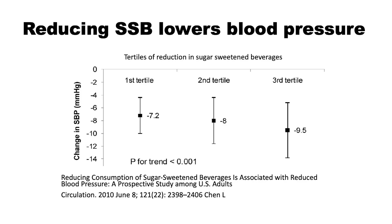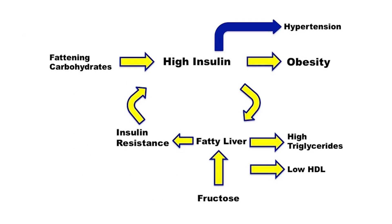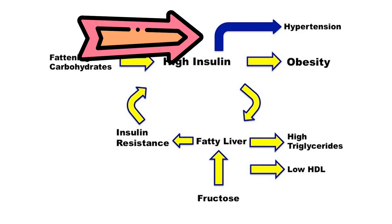In U.S. adults, when they reduced sugar-sweetened beverages by first, second, and third quartile, the more they reduced sugar-sweetened beverages, the lower their blood pressure tended to go. So once again, in this schematic, we see that high insulin leads directly to high blood pressure.